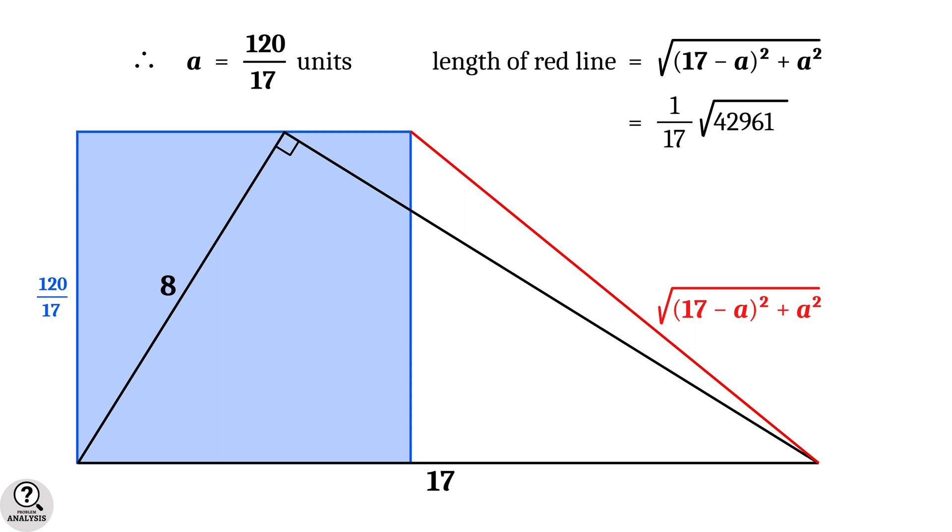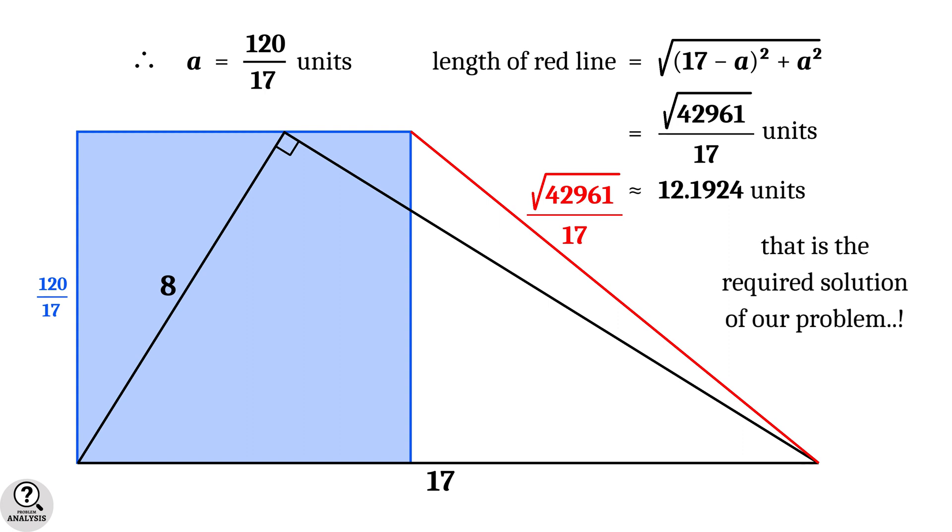So the length of the red colored line in our problem is 1 by 17 into square root of 42961 units. This value is approximately equal to 12.1924 units. And that is the solution we are looking for.